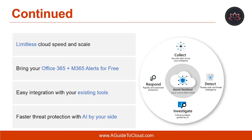You can detect previously undetected threats and minimize false positives using Microsoft Analytics and unparalleled threat intelligence. Then you would be able to investigate threats with artificial intelligence and hunt for suspicious activities at scale, tapping into years of cybersecurity work at Microsoft. And finally, you would be able to respond to incidents rapidly with built-in orchestration and automation of common tasks.